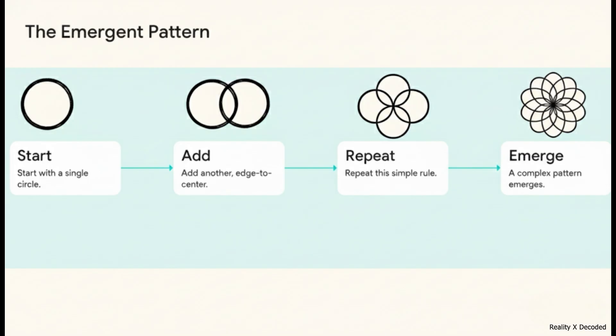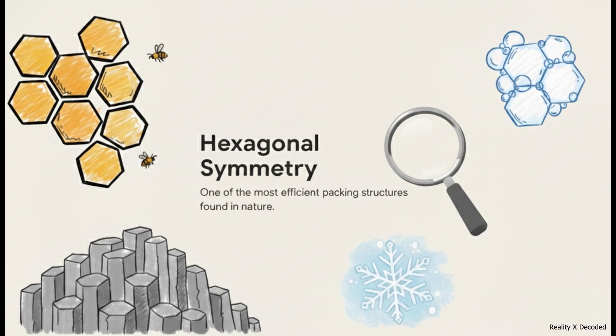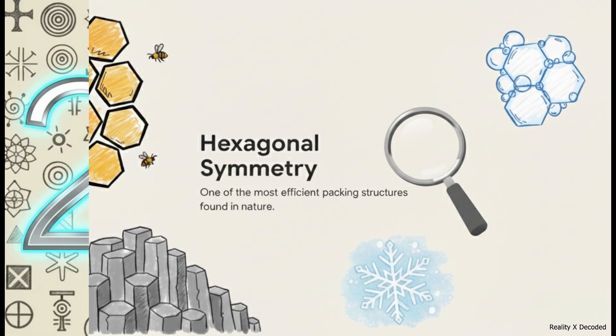That's it. That is the one and only rule. You just keep replicating that simple step, and without any secret knowledge or special intention, this intricate, beautiful, flower-like pattern just emerges, all on its own. Now, this structure has a name. Mathematicians call it hexagonal symmetry. And this isn't just some abstract idea. It actually describes one of the most stable and efficient ways to pack things together, a principle we see playing out all through the natural world.